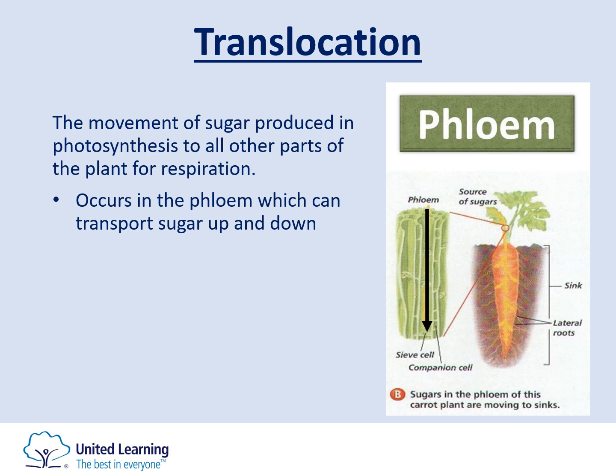Translocation occurs in the phloem cells, which are located in the stem near the xylem. Unlike the xylem, phloem can move in two directions — up and down — which is important because sugars are needed in every cell of the plant. The source of the sugars is the leaves, as they carry out photosynthesis. Once sugars are created, they enter the phloem and are transported to wherever respiration is required.